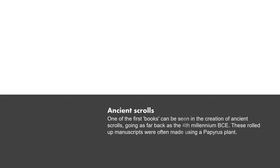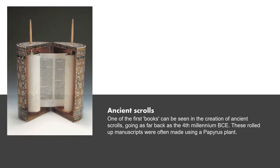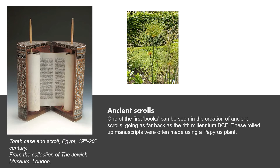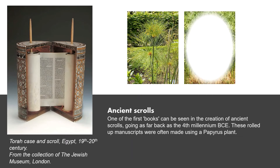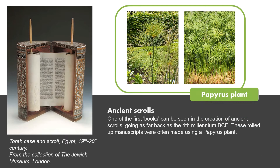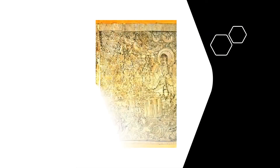Now we look at some history of the book. Ancient scrolls: one of the first books can be seen in the creation of ancient scrolls, going as far back as the fourth millennium before the Common Era. These rolled-up manuscripts were often made using a papyrus plant.